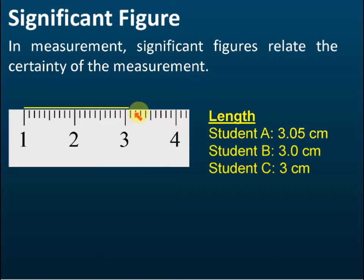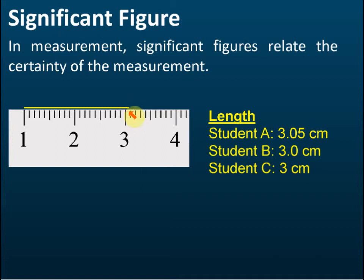For example, you can see we have a straight line here. Three students want to measure the length of this straight line, and this is the ruler. They found that the length falls around 3.1 cm, but the end of the line falls around the middle — about the middle. So these three students give different answers.